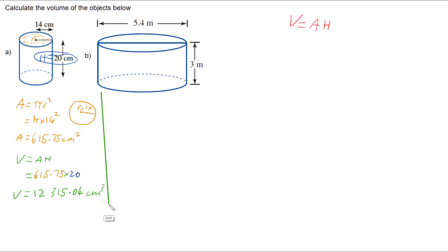Having a look at our second one, we've got a much bigger circle sitting on top here that we're going to use for our area, but we've been given diameter. So we need to divide that by 2 to get radius. Our radius is 5.4 divided by 2, so we're going to have a radius of 2.7 metres.